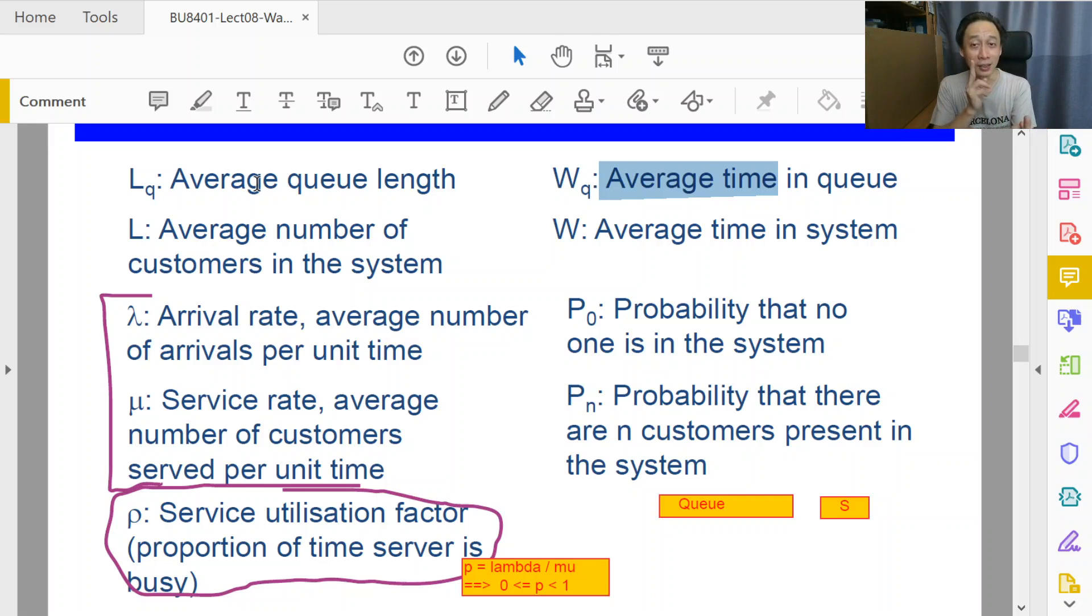And you choose that queue thinking that it is shorter for you to wait till your turn, turns out to be not the case. So that's why we need queue analysis, we need to have a sort of model to go through the entire mathematical calculations and then tell us what is average queue time, what is the average queue length.